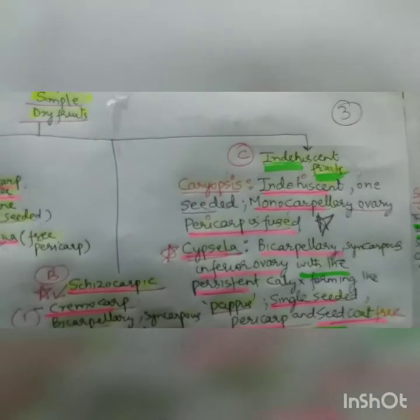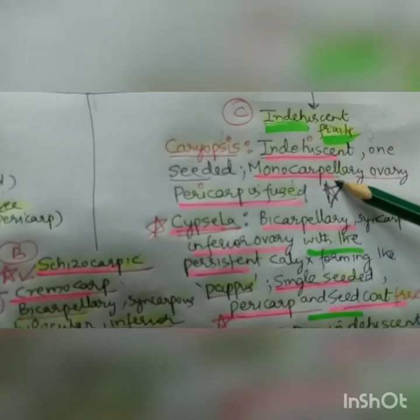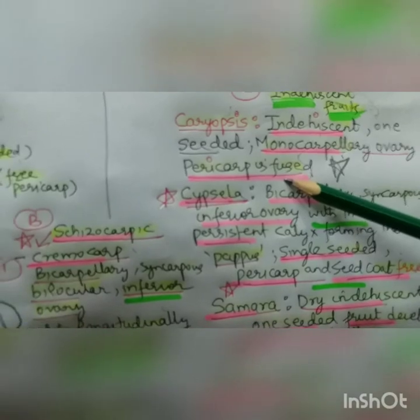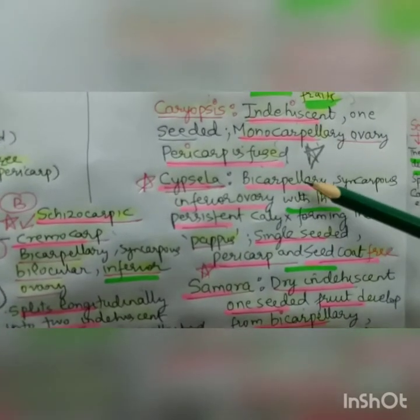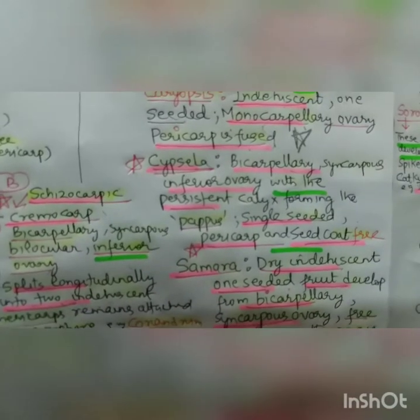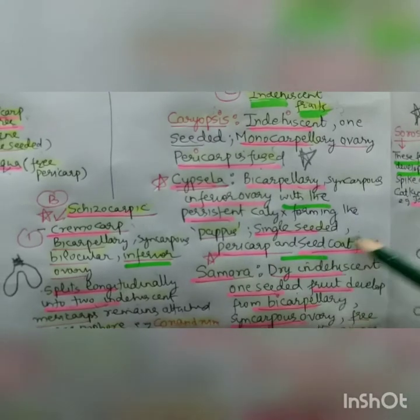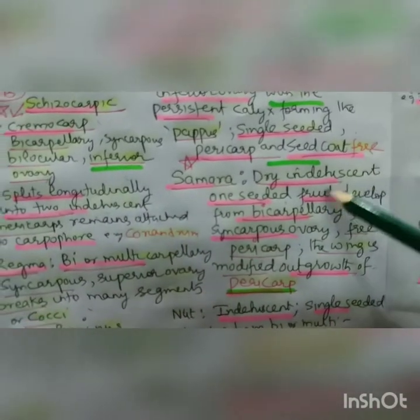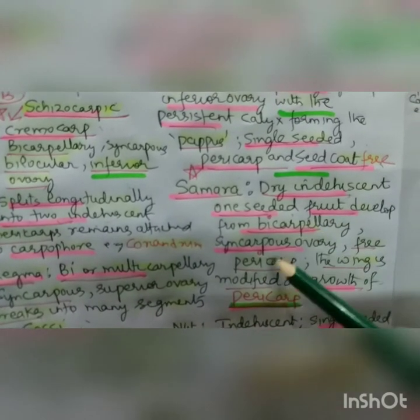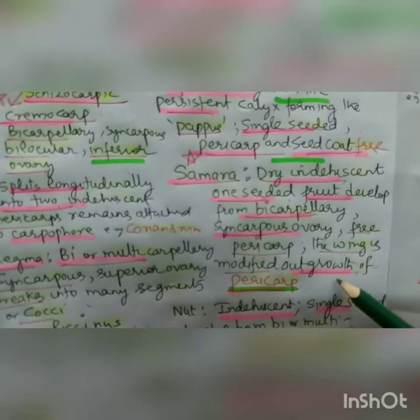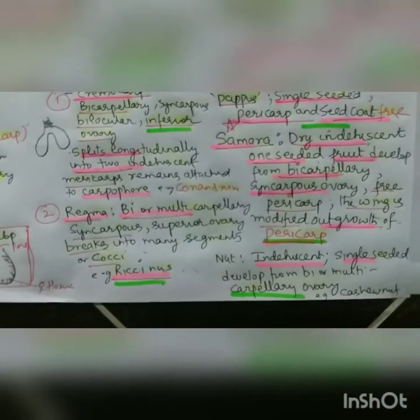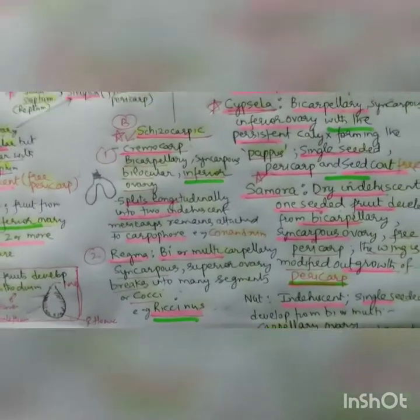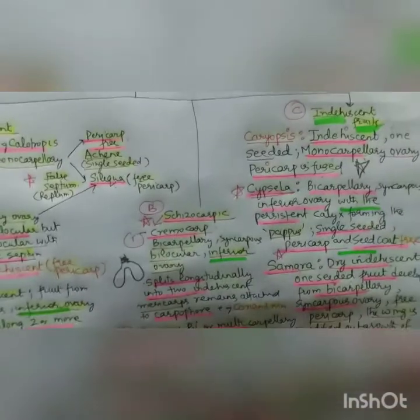Now, what is caryopsis? It comes under simple dry fruits - the indehiscent type. It is one-seeded, comes from a monocarpellary ovary, and the pericarp is fused with the seed coat. Cypsela is bicarpellary, syncarpous, but with an inferior ovary and persistent calyx forming a pappus; it is single-seeded and pericarp is free. Samara is dry indehiscent, one-seeded, bicarpellary, syncarpous, free pericarp, and the wings of samara are outgrowths of the pericarp.